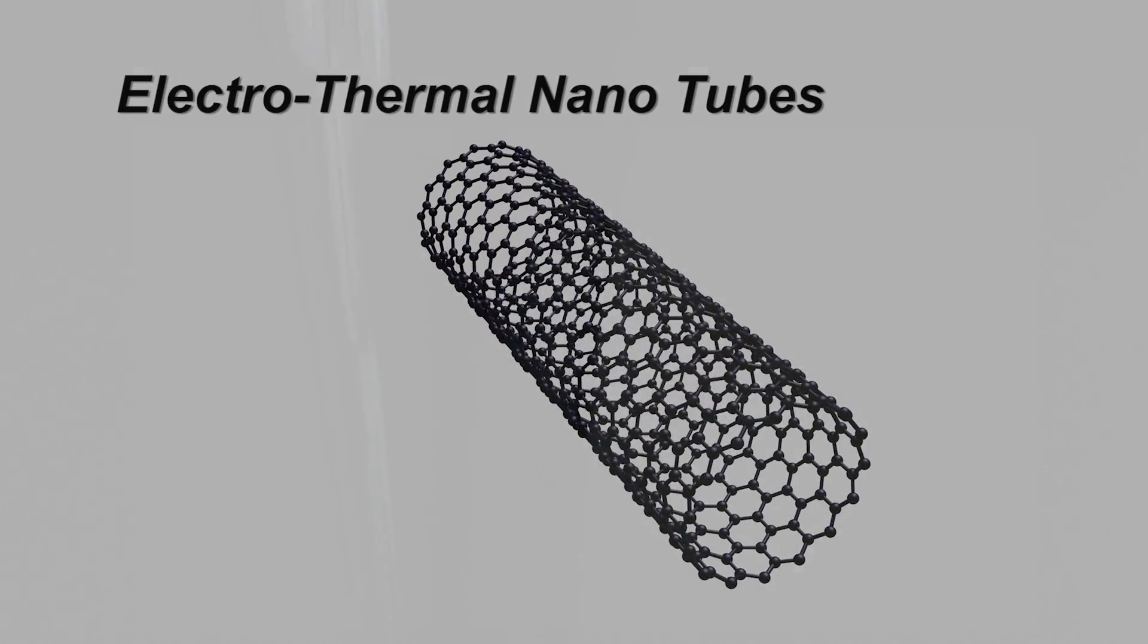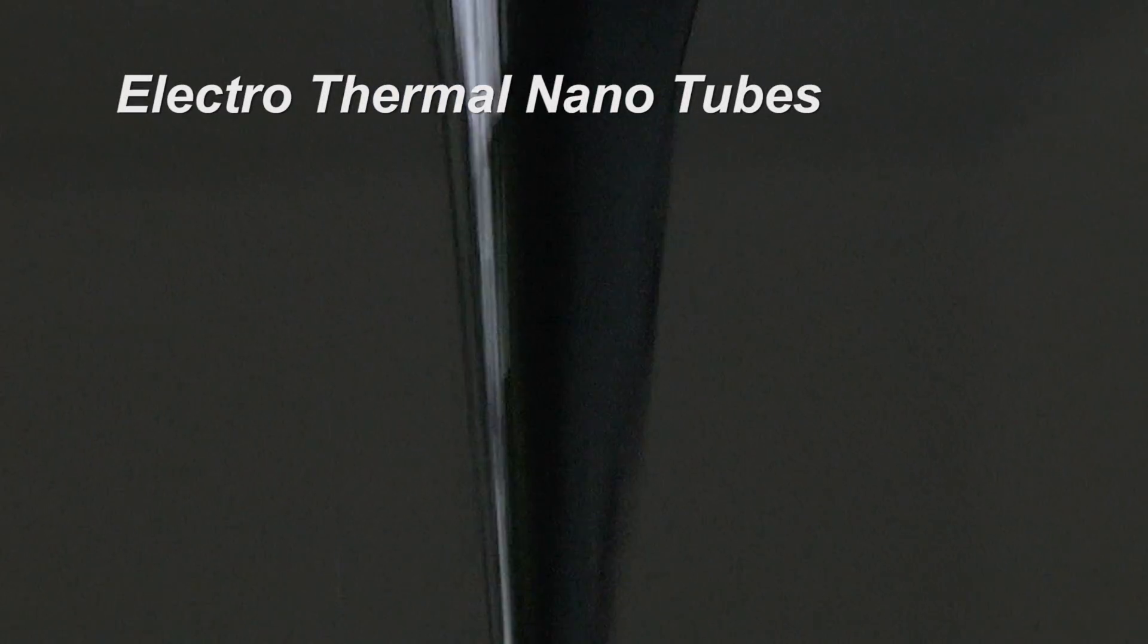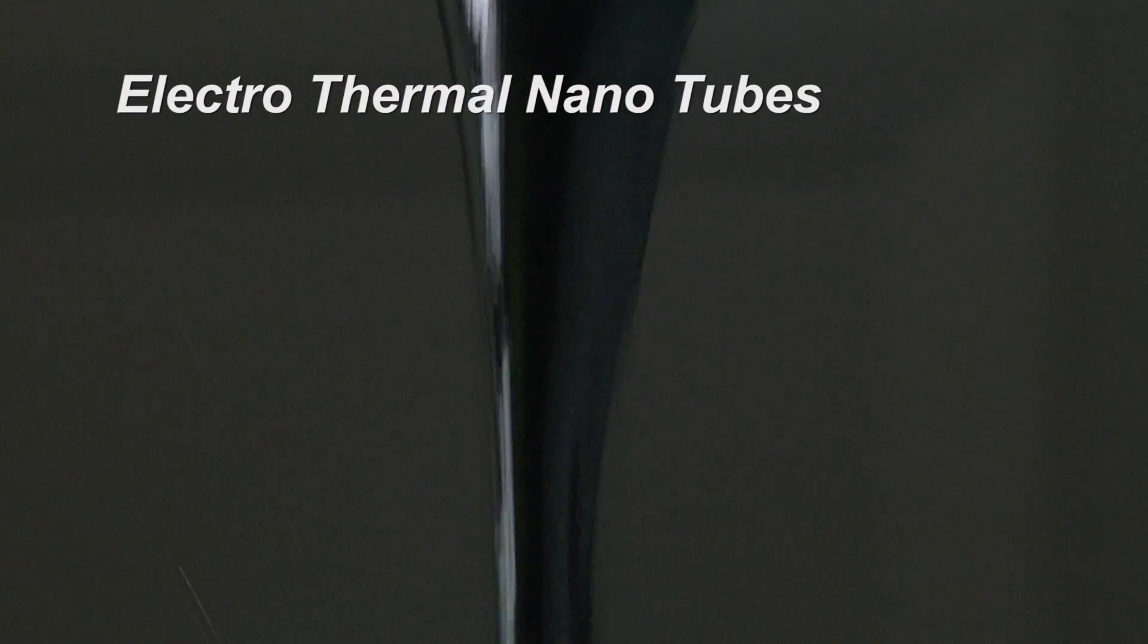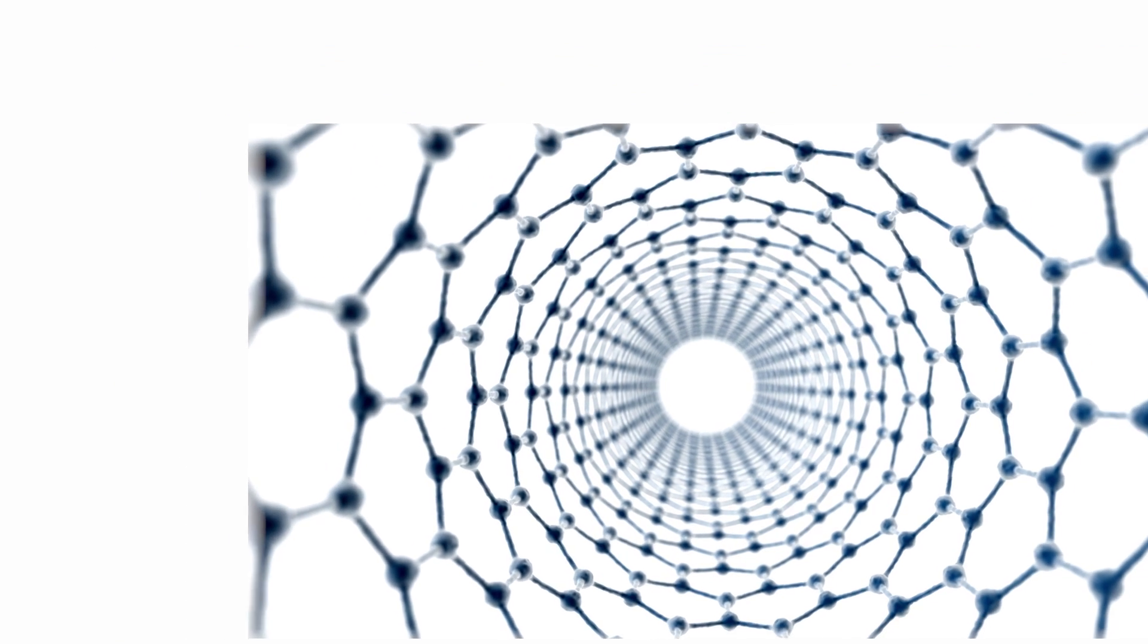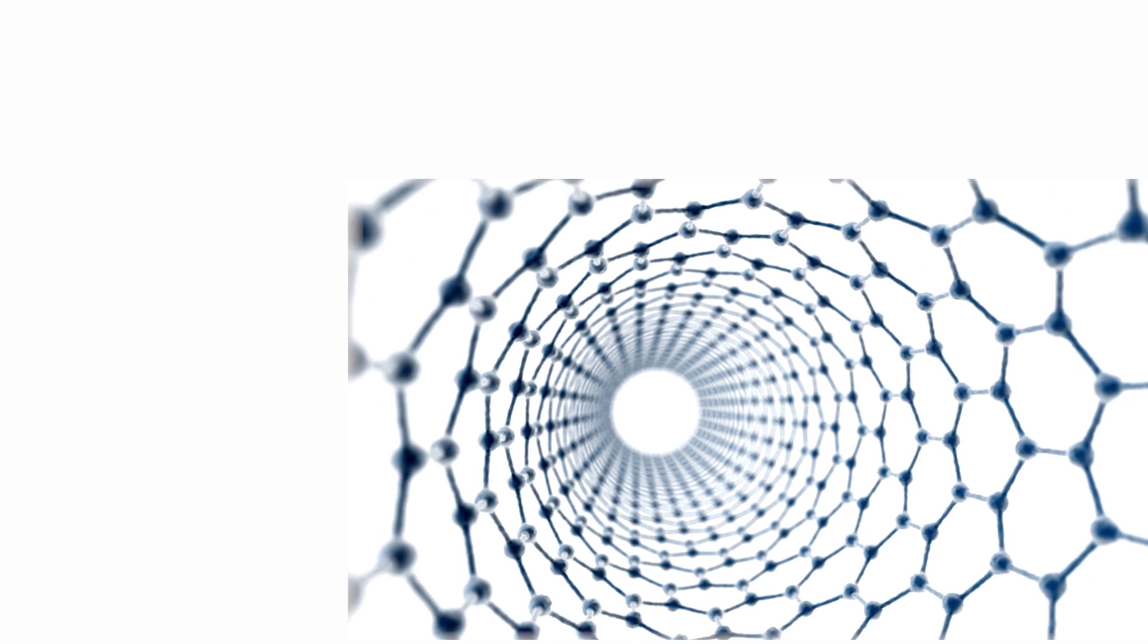Held in suspension within Thermal Coat's urethane base are millions of electrothermal nanotubes. Electrothermal nanotubes are microscopic fibers of carbon that have been designed with three very important characteristics.